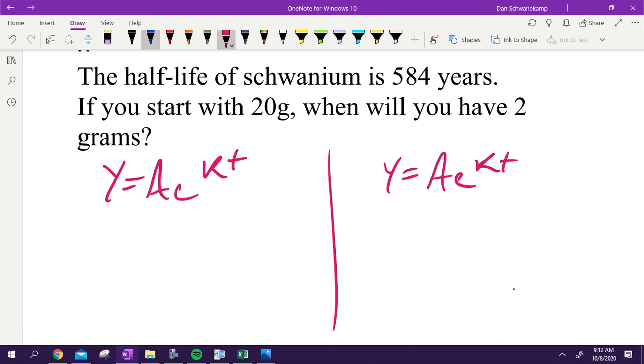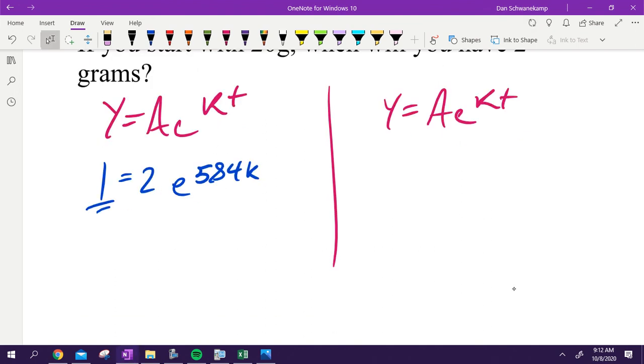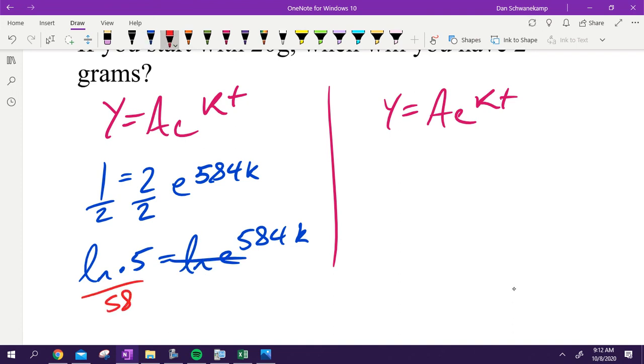We're trying to figure out half-life the first time, so it doesn't matter what you started with, you're going to have half of it. My k is going to be... I'm figuring out my k. My time is 584. So I'm going to get 0.5 equals e^(584k). I take the natural log, I'm going to divide by 584, and that is my k value. So k is equal to negative 0.0011 something. It's this number right here.